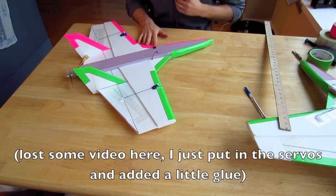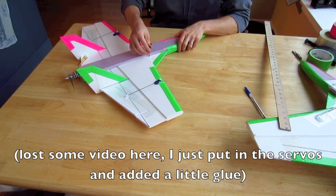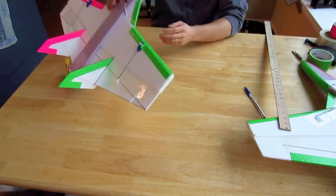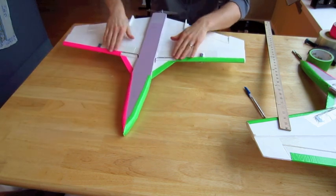So that is pretty much it. Since last time I left off where I fed the servo wires up through the top of the fuselage, they come up right here. I just taped down the wires on the bottom.